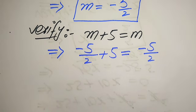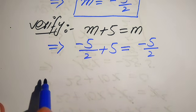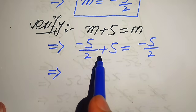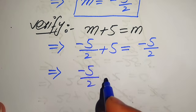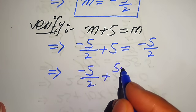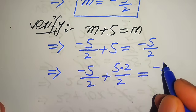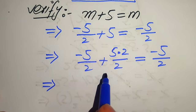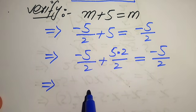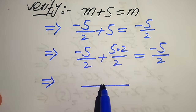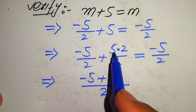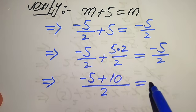We need a little simplification on the left hand side to check whether both sides are equal. We take the LCM by making the denominators of both terms the same, multiplying and dividing the whole number term by 2. The denominator of both terms is now the same, so we take the LCM and get minus 5 plus 10 over 2, and check whether this equals minus 5 over 2.